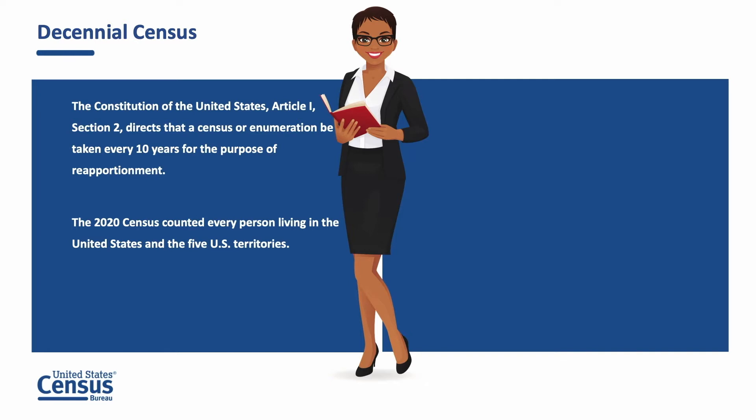The data collected by the decennial census are used to determine the number of seats each state has in the U.S. House of Representatives. The population in 1790 was 3,929,625, and Congress used these results to apportion 105 seats among 15 states.